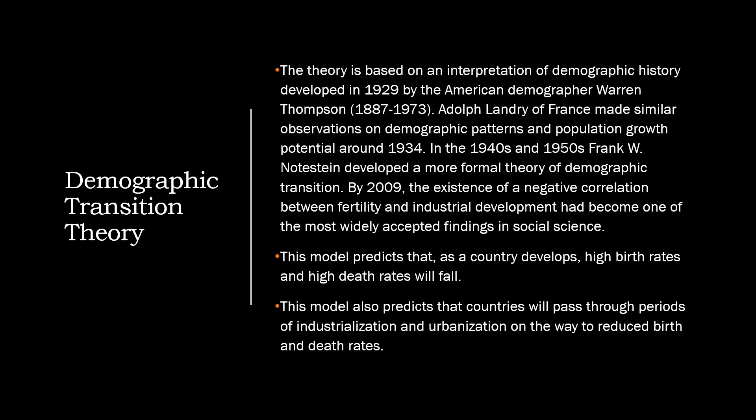The demographic transition theory is based on an interpretation of demographic history developed in 1929 by American demographer Warren Thompson. Adolf Landry of France made similar observations around 1934. In the 1940s and 50s, Frank W. Notestein developed a more formal theory of demographic transition. By 2009, the existence of a negative correlation between fertility and industrial development had become one of the most widely accepted findings in social science.